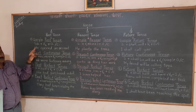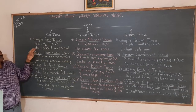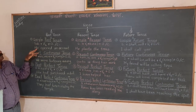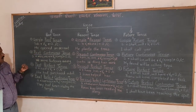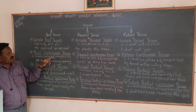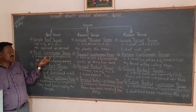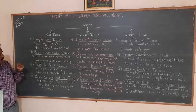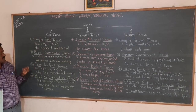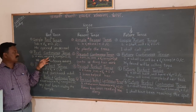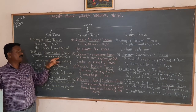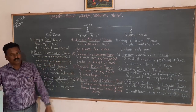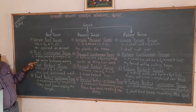For negation, we use 'didn't', and for interrogative sentences, we use 'did'. We need not use auxiliary verbs in simple past tense when it is an affirmative sentence. Next, past continuous tense: past continuous means the action is started but not completed in the past. The construction is subject plus was/were plus V4 (V1 plus -ing) plus object or complement. Example: 'We were listening to a song.'